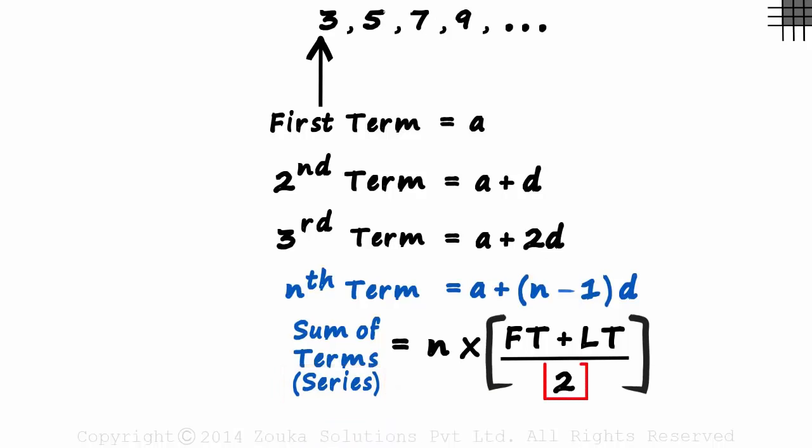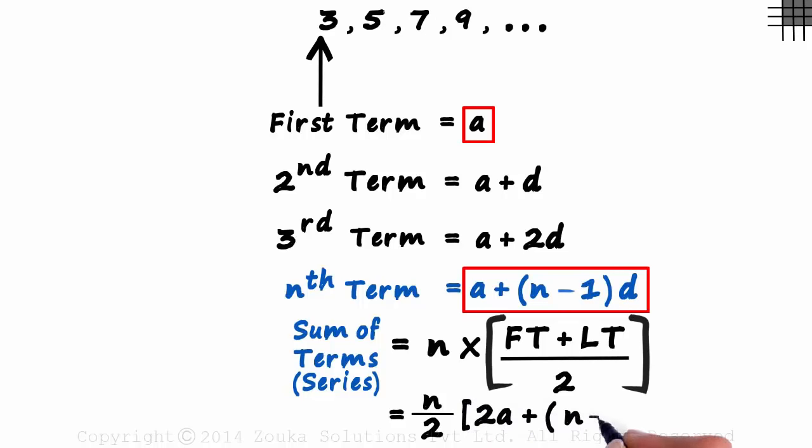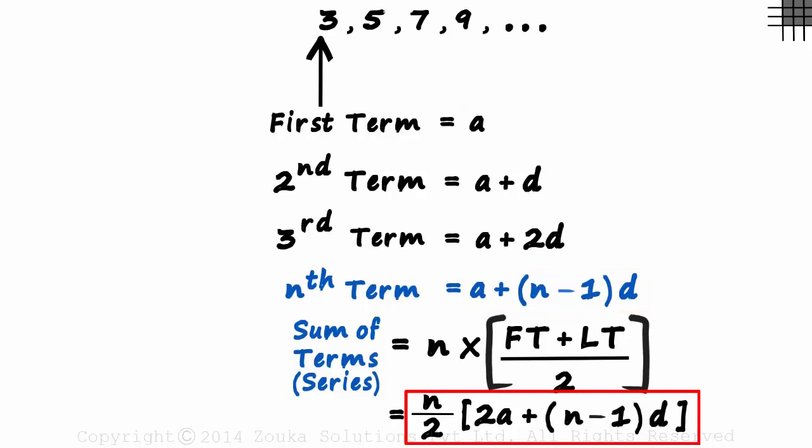Let's take the 2 outside and write N by 2. The first term is A and this is the last term. So first term plus the last term is equal to 2A plus N minus 1 times D. This is the formula to find the sum of terms in a sequence.